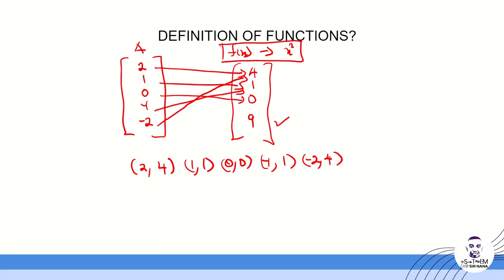Every element in the domain maps to exactly one element in the co-domain. For instance, 2's co-domain is 4, and 1's co-domain is 1 — it doesn't also map to zero. Similarly, when you use a ride-hailing app traveling 12 kilometers, the price you pay is fixed — say 50 Ghana cedis — so one element in the domain maps to only one element in the co-domain. This is the definition of a function.